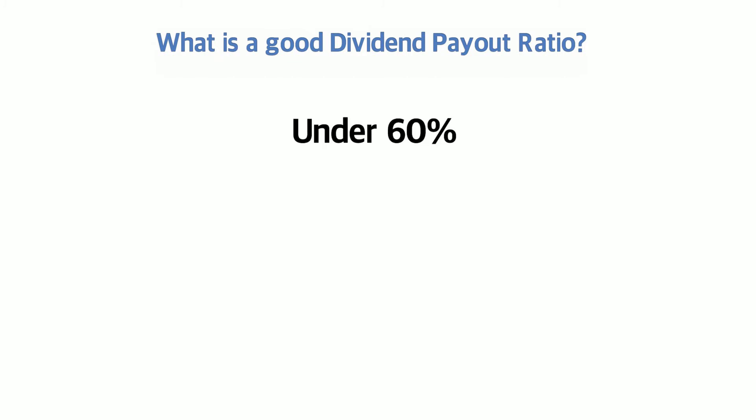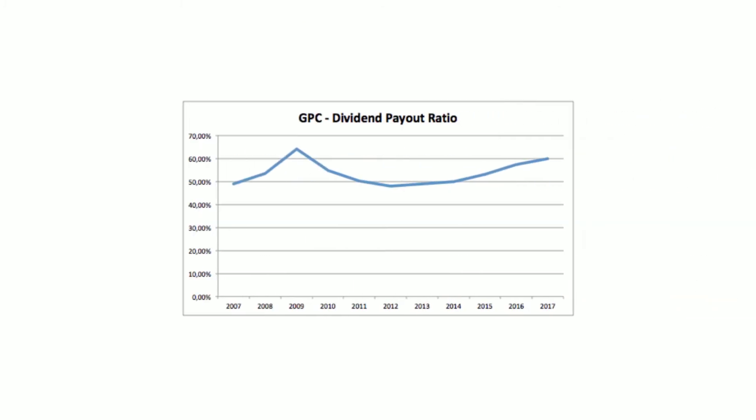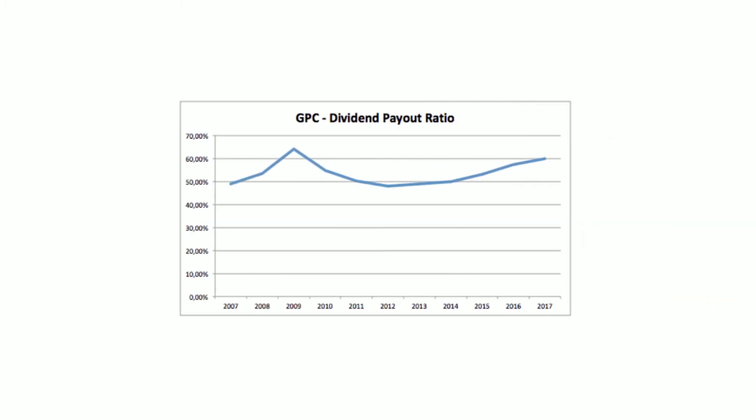For example, if you look at GPC, you can see that they've done a pretty good job keeping their payout ratio below 60%. Only one year did it shoot up above 60%, but it came back down.